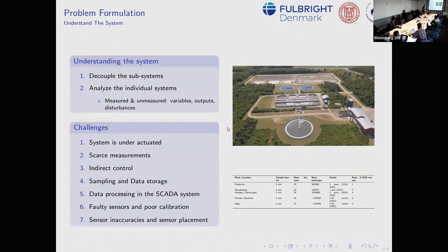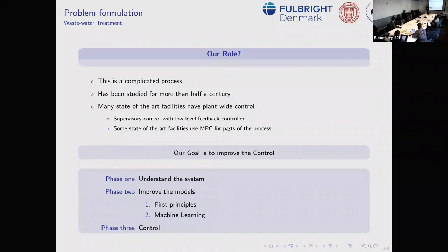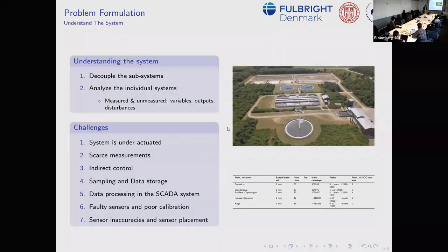Today I'll talk mostly on modeling. The number one problem is datasets — that's often where we start. We decouple the subsystems, analyze them individually, and identify measured and unmeasured variables. Some challenges we've faced: the system is underactuated, there's a scarcity of measurements, and some measurements are not of good quality.